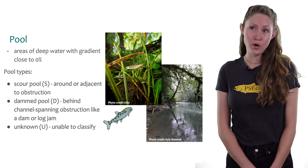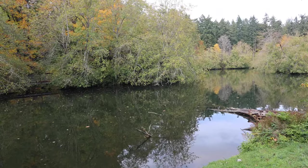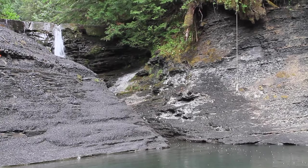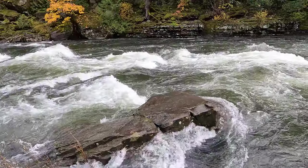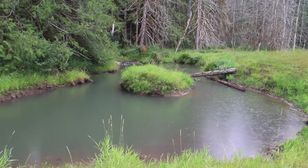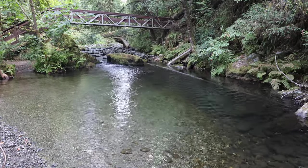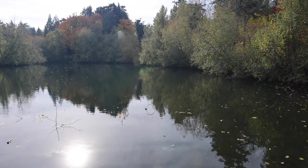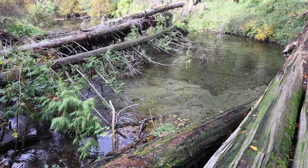Pools are areas of deep water in non-steep areas with gradients close to zero percent. Think of them as rest stops for salmon along their migration routes. Pools are evidence of where flowing water has eroded sediment away, which can happen when water flows over or around obstructions like large boulders or large pieces of wood. Pools come in many sizes. A scour pool is a smaller pool found at the edge of a channel behind a relatively small obstruction. A dammed pool spans the entire channel width, often created by a big log resting across the entire channel.